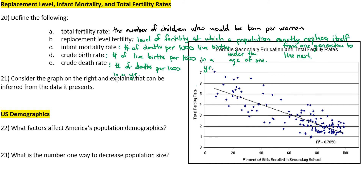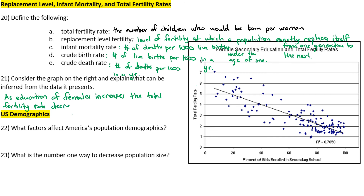Number twenty-one: consider the graph and explain what can be inferred. As education of females increases, the total fertility rate decreases.